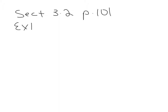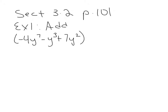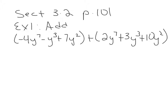On page 101, it says add the polynomial. So that's negative 4y to the 7 minus y cubed plus 7y squared, which is a trinomial based on the fact that it has three terms, plus 2y to the 7 plus 3y cubed plus 10y squared, another trinomial. How do we add polynomials? Addition happens when there's a plus sign between two polynomials — you can drop the parentheses and combine like terms.